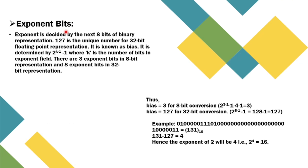The exponent bits are decided by the next 8 bits of the binary representation. 127 is the unique number for 32-bit representation, known as the bias. It is determined by 2 to the power k−1, where k is the number of bits in the exponent field.